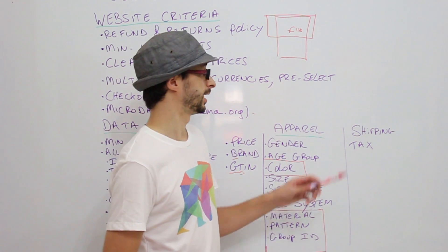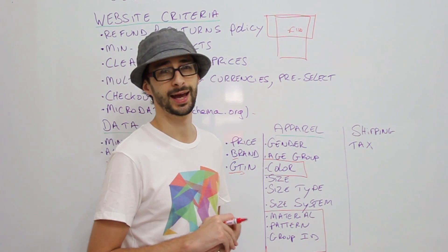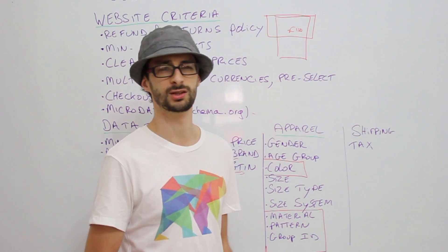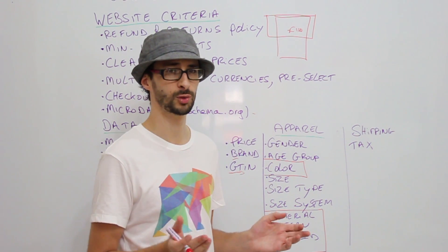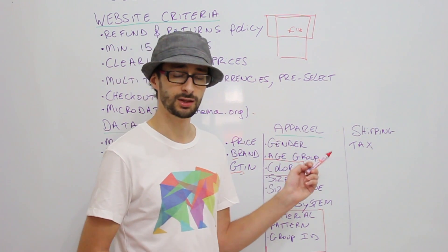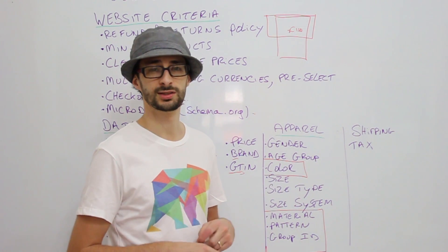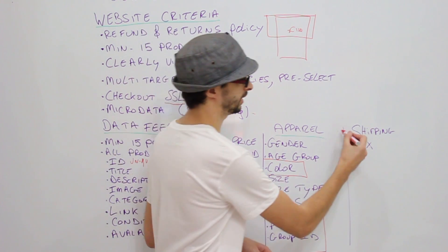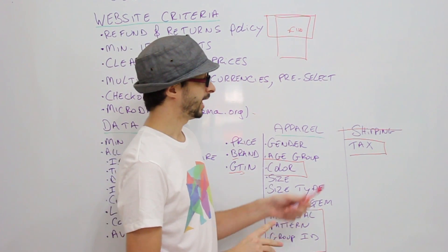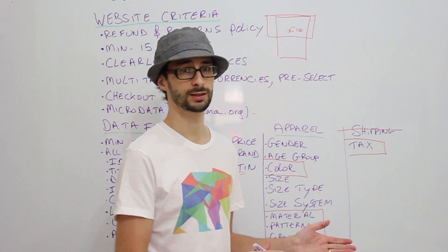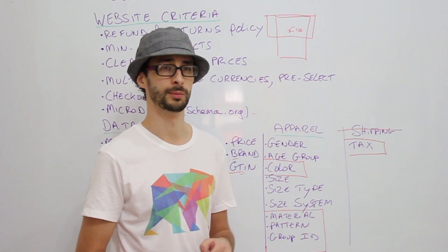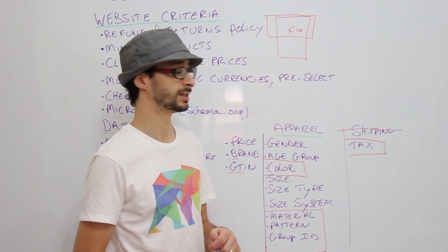The last part I want to cover is shipping and tax. There are two areas where you can add this value. You can add it in your product feed — if you have different sizes and weights with a complex shipping pricing system, then it's better to add it to your data feed. Alternatively, you can add it in Google Merchant Center by going to settings and adding a fixed price, so you don't have to add it to your data feed. Tax is actually only relevant for the US market — for example, if you have one tax rate in California and another in New York, you need to identify that per product in the product feed.